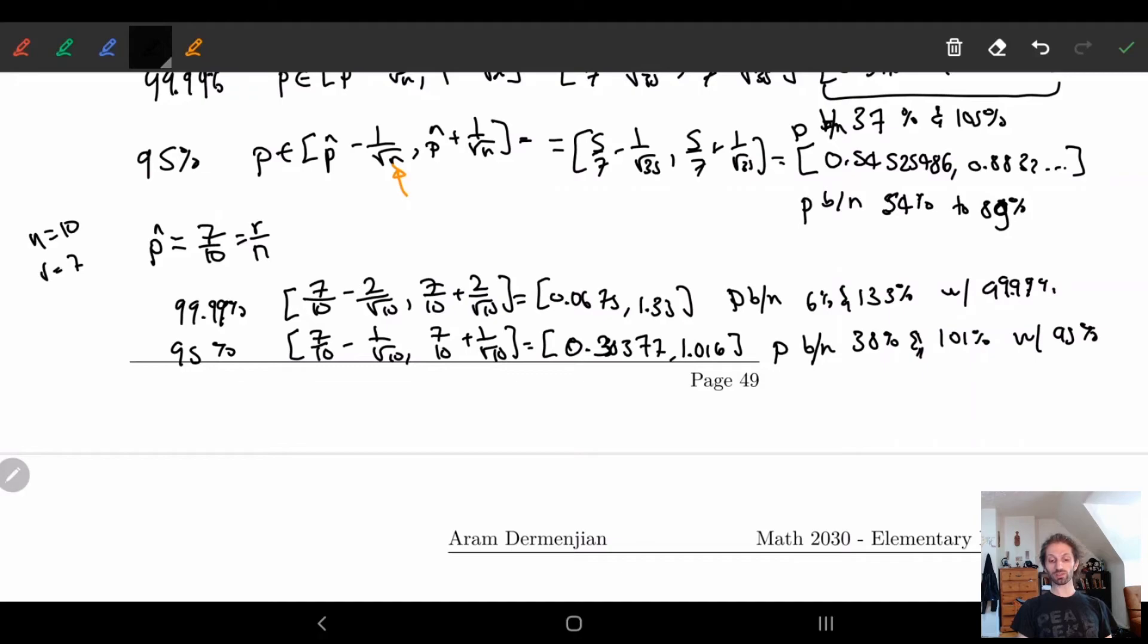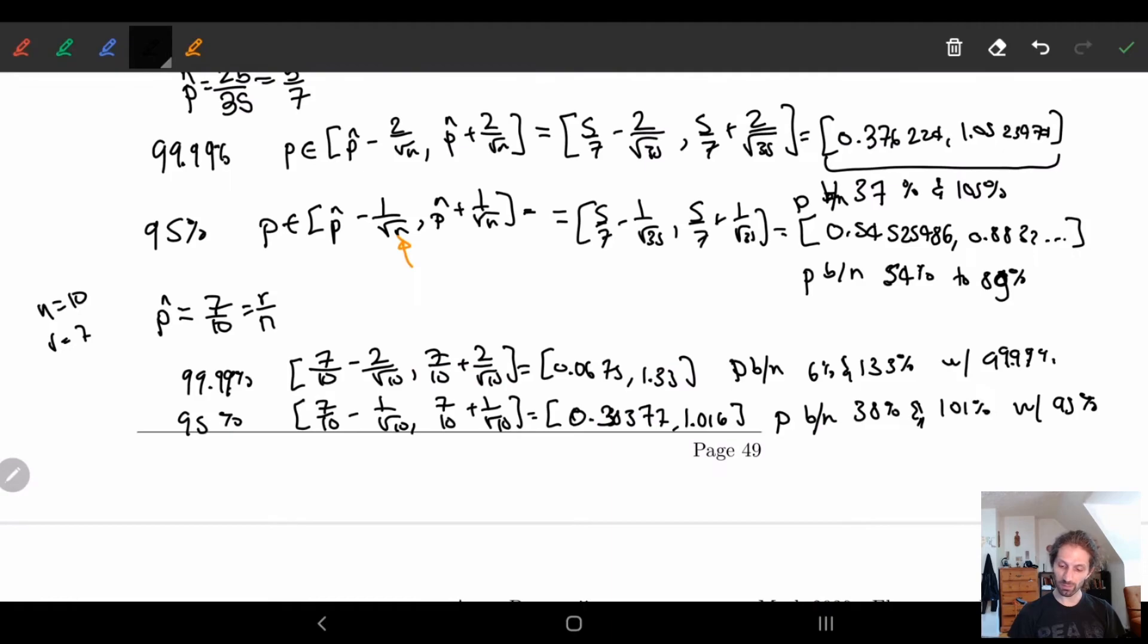So what you'll notice here is doing the trial 10 times with 95% confidence, we'll end up between 38 to 100%. But if I do this trial 35 times, then I get a 99.9% of being roughly in the same interval. So this is what I'm saying.